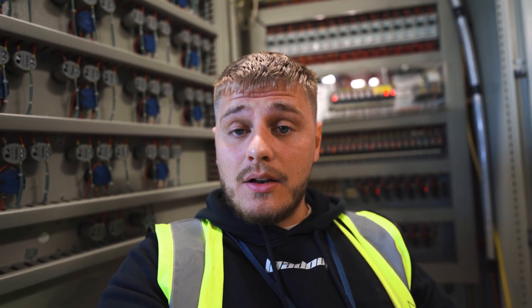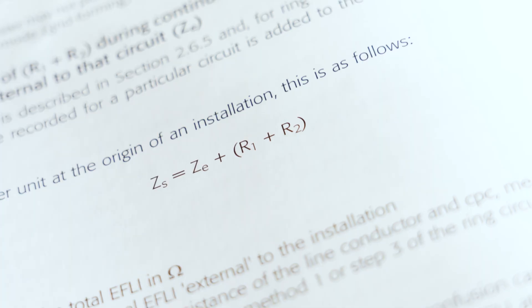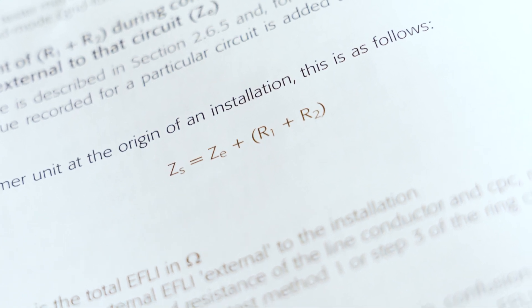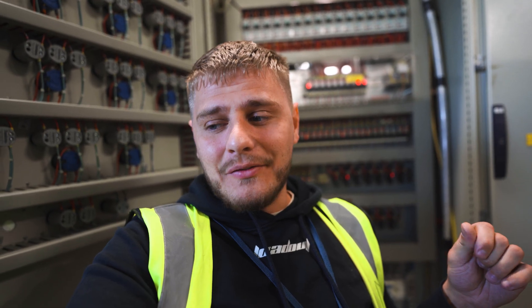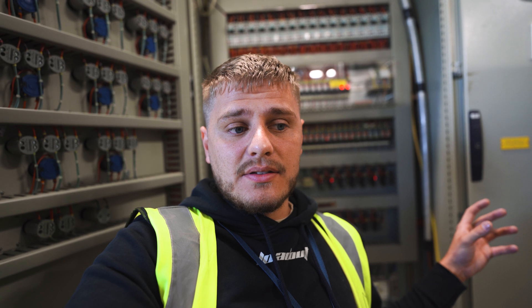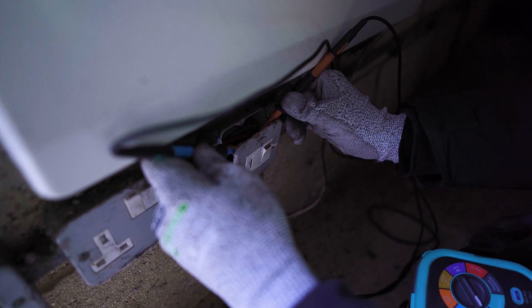You have to get a Ze as part of an initial verification or an EICR. You can get that value and then add on your R1+R2 — since resistance and impedance are essentially the same — so you're getting your external impedance and adding on the resistance of your circuit to calculate your Zs. Method two, calculation, is actually the preferred method because it involves less live testing, but everyone on site just uses method one and actually tests it.